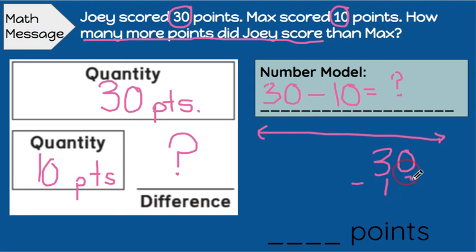30 minus 10. 0 minus 0 is 0. And 3 minus 1 is 2. So the total difference between Joey's score and Max's is 20 points.